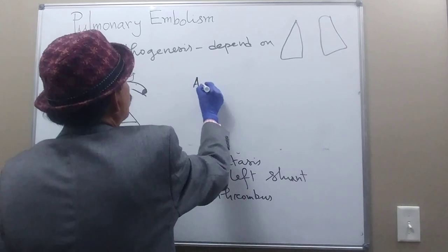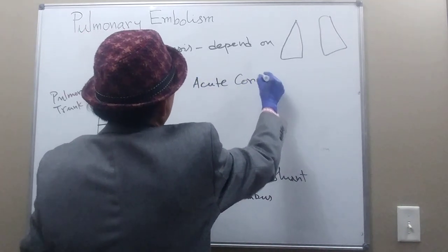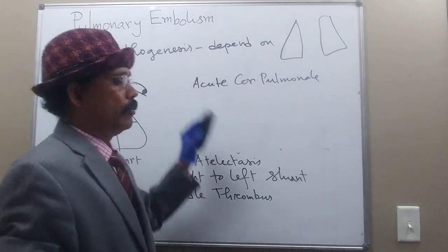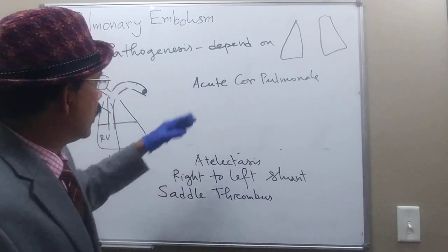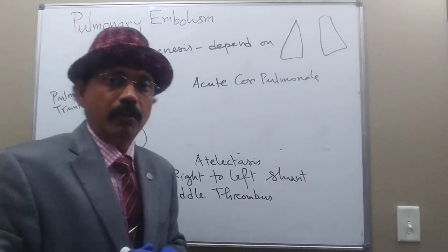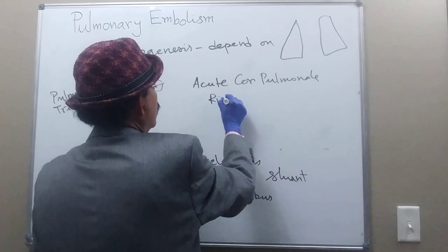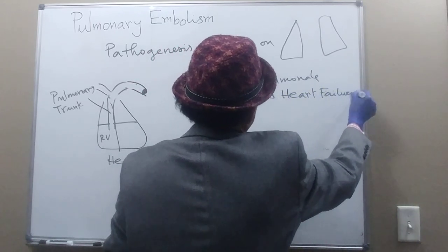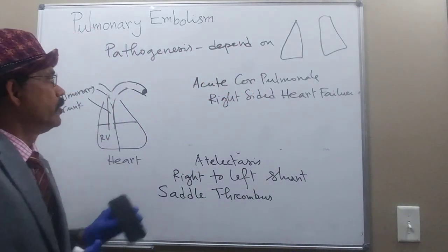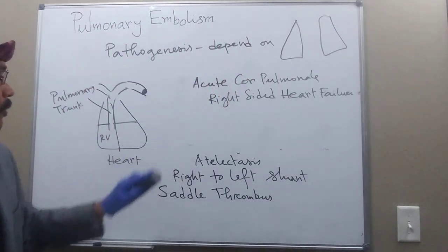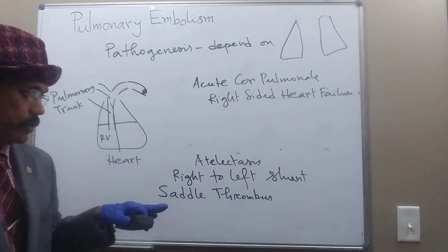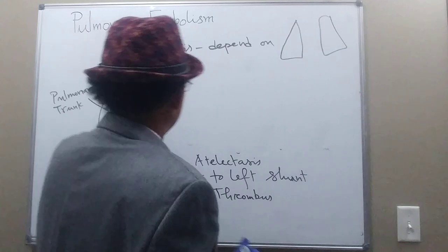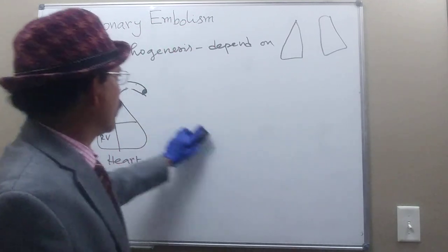Another important term is acute cor pulmonale. When major arteries are blocked, blood cannot go to the lung, so there will be lack of return of blood from the lung to the heart, leading to very acute right-sided heart failure with anoxia. This happens very quickly.